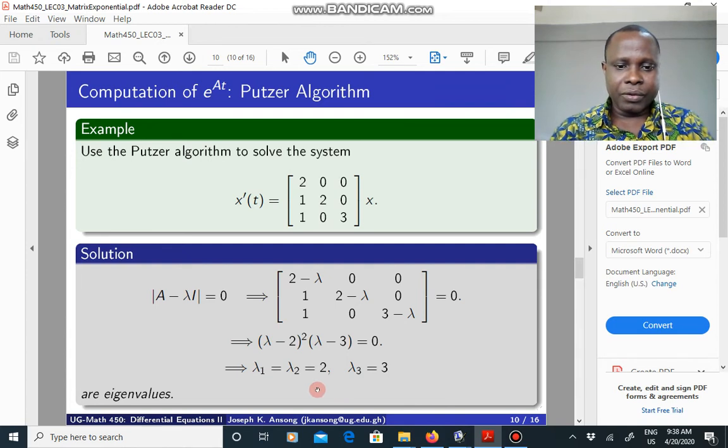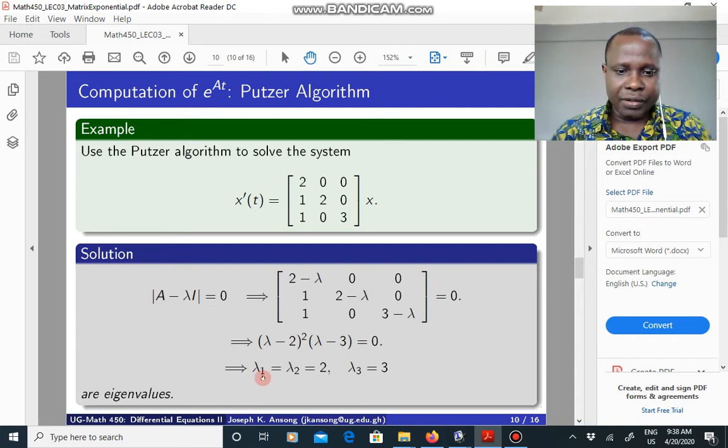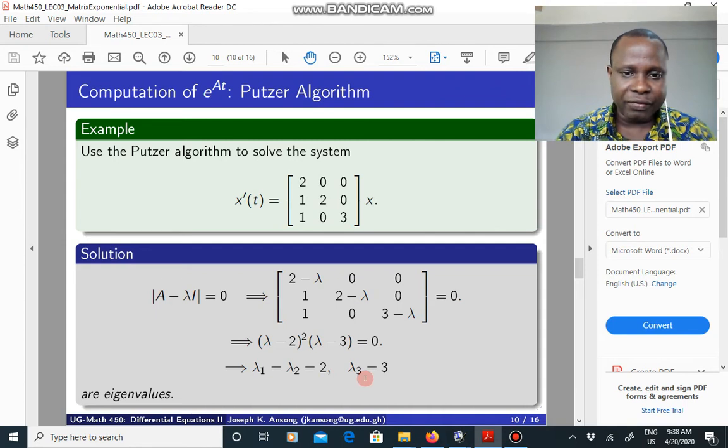Now you have to be careful how you choose this. Actually it doesn't matter how you name them but you have to be consistent throughout in your solution. So you could have said lambda 1 is 2, lambda 2 is 3 and lambda 3 is 2. But when you go to computing the P's you make sure that the lambda 1 and 2 and 3 are consistent with how you have named them here. So consistency is very important. Here we chose lambda 1 and lambda 2 to be 2 and lambda 3 to be 3.